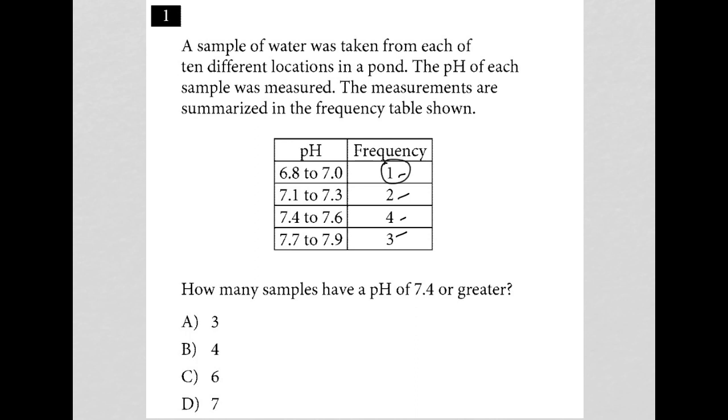So there was one location that had a pH between 6.8 and 7.0. Two locations were between this range, four locations within that range, and three locations were in that range.